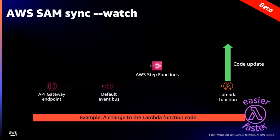SAM sync deploys the build you packaged with SAM build and pushes what's changed to the cloud for testing. You can also use SAM sync watch, which watches your code for changes and automatically decides if it should be a configuration update or a code update. If it's a configuration update, it uses CloudFormation for a full stack update. For code updates, it just updates the code — automatically, as you make changes.